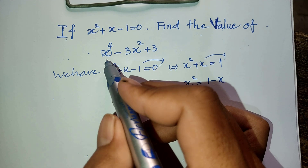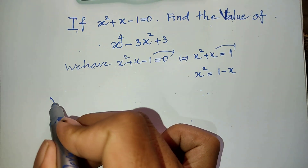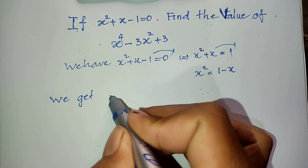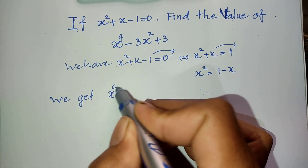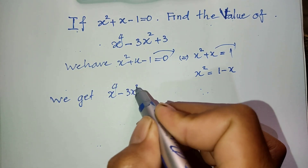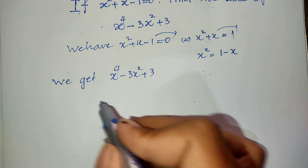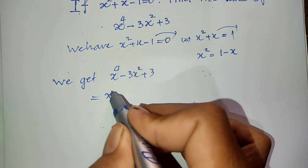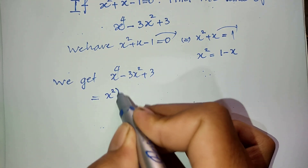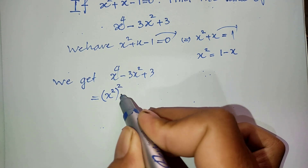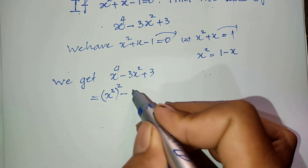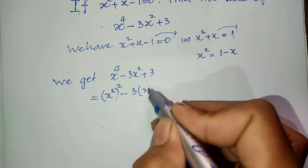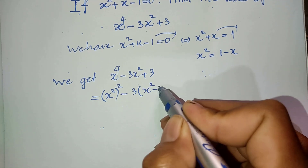Now, to find the value of this equation, x power 4 minus 3x squared plus 3. I can write x power 4 as x squared times x squared. And minus 3, I take 3 out as a factor, I get x squared minus 1.